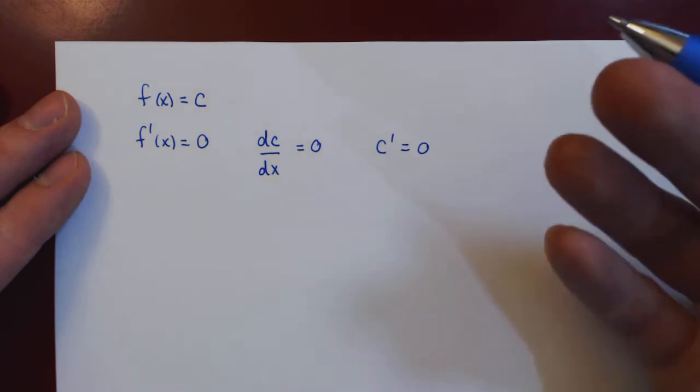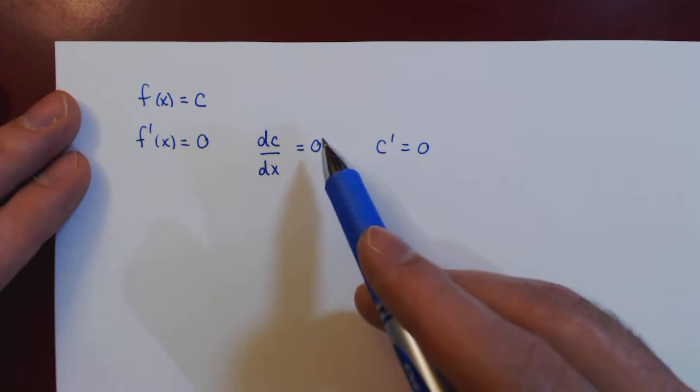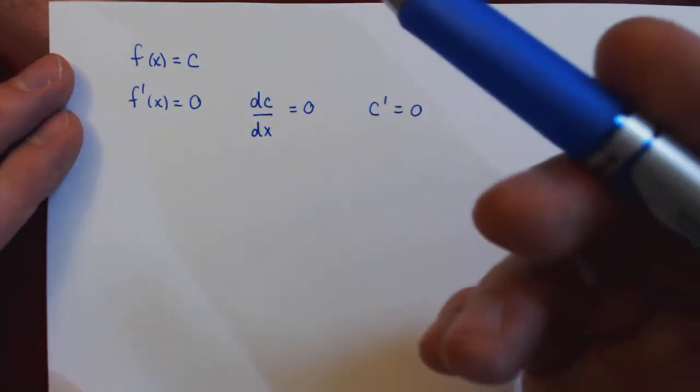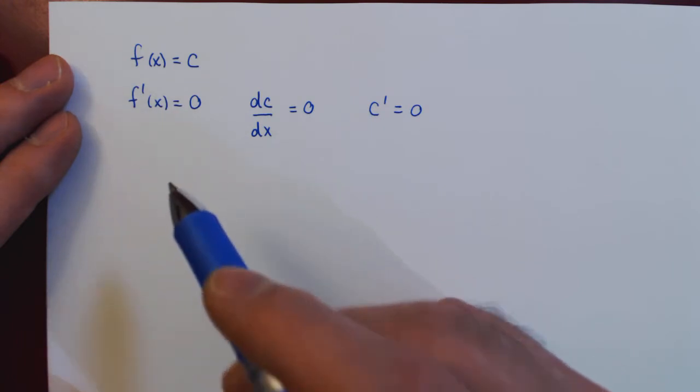And let's give a geometric argument as to why it makes sense that the derivative of a constant should be equal to zero. And when I say geometric, I mean by visualizing what this means.